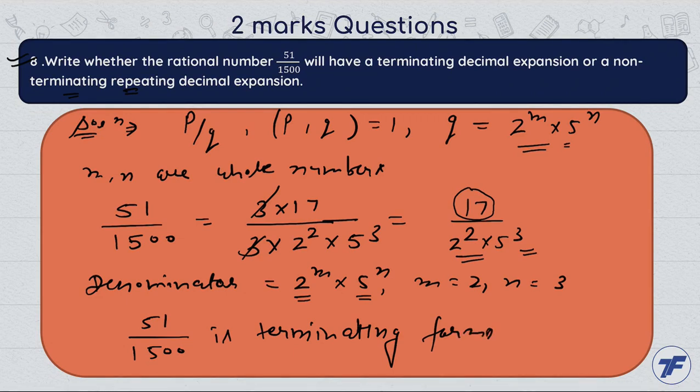Also we can say it will be terminated after three decimal places because we have the denominator which is the largest. Three decimals after, we have the number terminated. I hope that you will clear the concept.